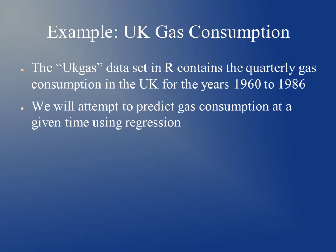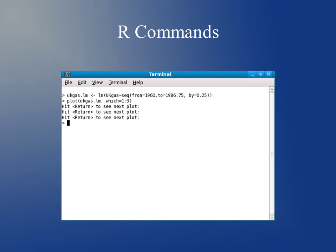This next example will be a severe violation of the assumptions. R contains the quarterly UK gas consumption data for the years 1960 to 1986, and we'll attempt to predict gas consumption at a given time using regression. We use the LM command to create a linear model going from 1960 to 1986.75 — plotted every three months — and then use those three diagnostic plots.